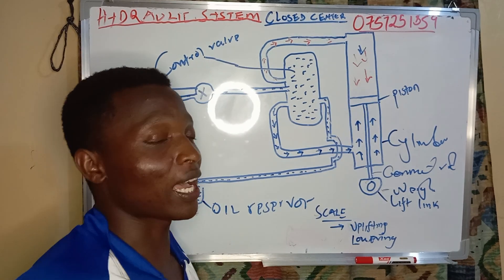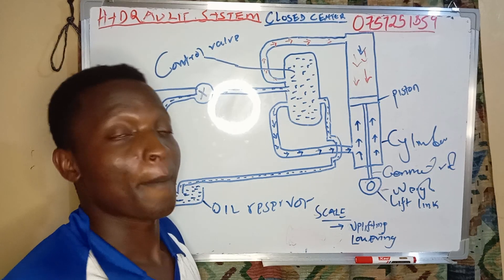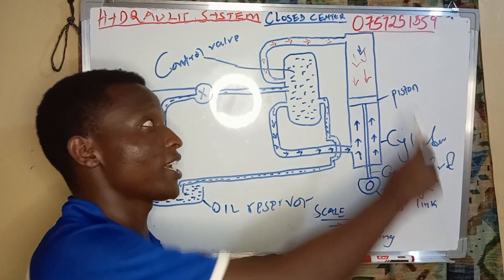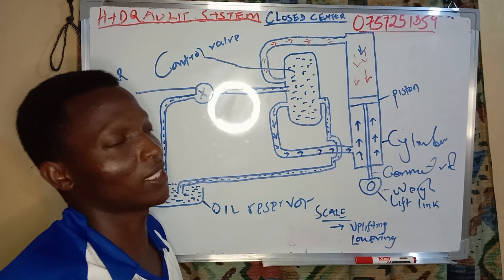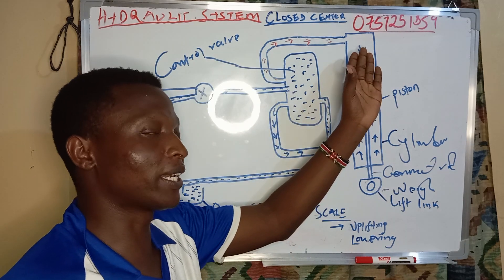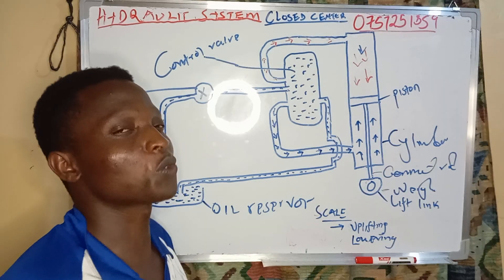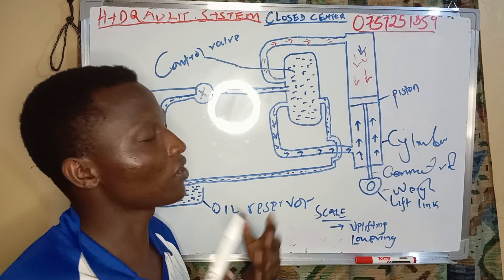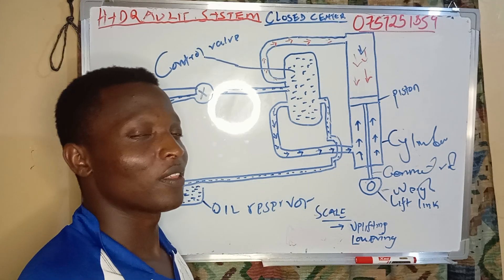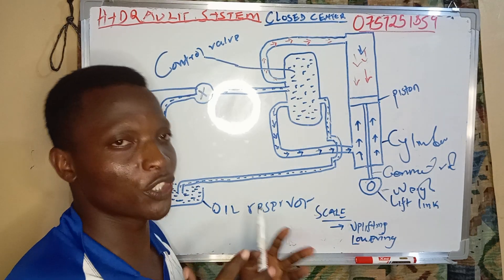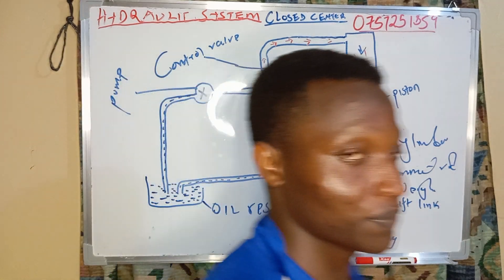By the way, I'm Kasango Jr., an agronomist and extension officer by profession. Here is my number in case you want to get my service. And do not forget to subscribe to my channel so that we can enjoy learning more and more. Thank you my people for watching.